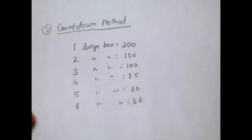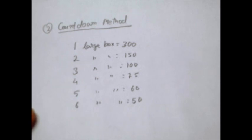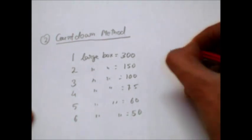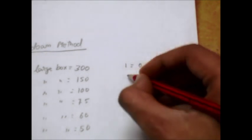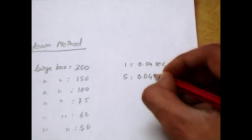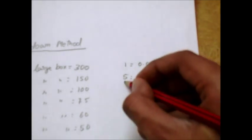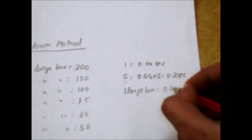So if 1500 small boxes constitute 60 seconds, then how many large boxes will constitute 60 seconds? We know that one small box equals 0.04 seconds. So five small boxes will constitute 0.2 seconds. Five small boxes equals one large box, right? That is one large box equals 0.2 seconds.